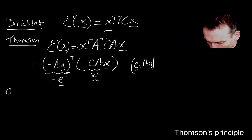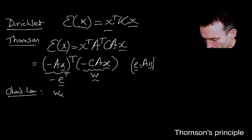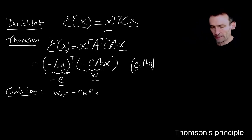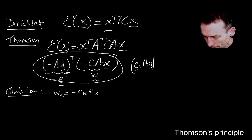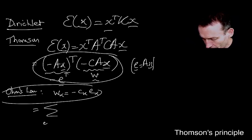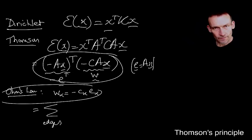And now you remember Ohm's law. Ohm's law says that the current in edge K is equal to minus the conductance in edge K times the potential difference in edge K. So what I can do here is I can write this thing as a sum over the edges.